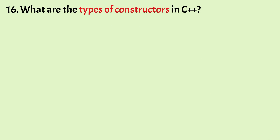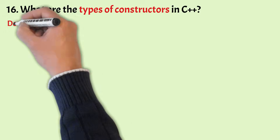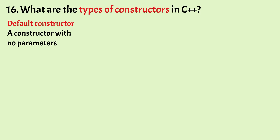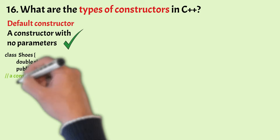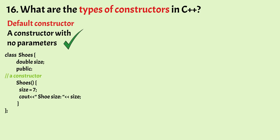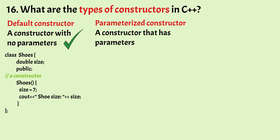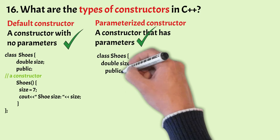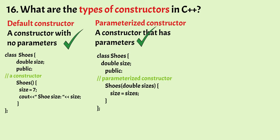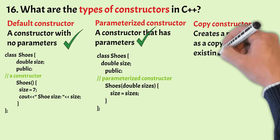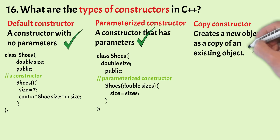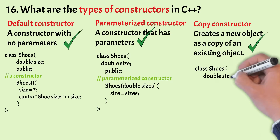Moving on: what are the types of constructors in C++? There are three types of constructors in C++. The first is the default constructor — a constructor with no parameters is known as a default constructor. The second is the parameterized constructor — a constructor that has parameters is known as a parameterized constructor. The third is the copy constructor — it is a special constructor that creates a new object as a copy of an existing object.